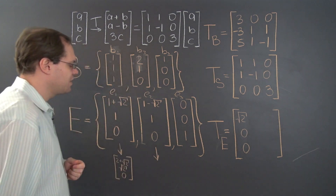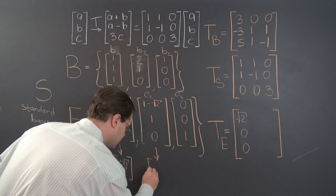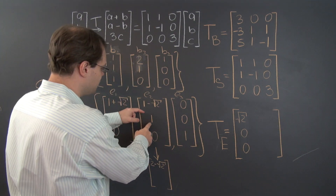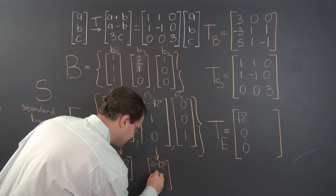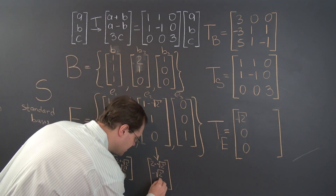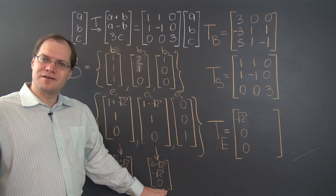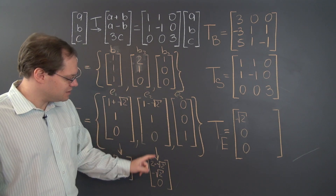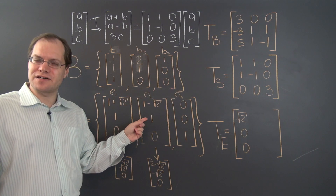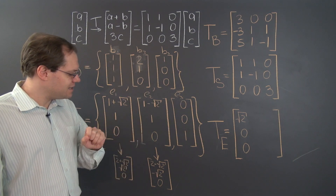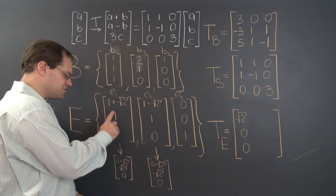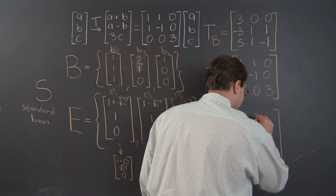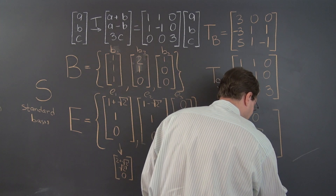Now let's do the same thing with the next basis element E2. We get 2 minus square root of 2, 2 minus square root of 2 for the sum, then the difference gives minus square root of 2, minus square root of 2, and 0 for the last entry. And this vector, despite its outward complexity, is also simple to decompose with respect to this basis because it is minus square root of 2 times E2. So the resulting coefficients for the decomposition are 0, minus square root of 2, 0.